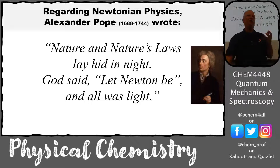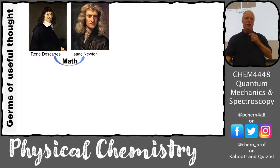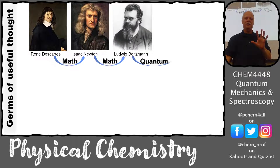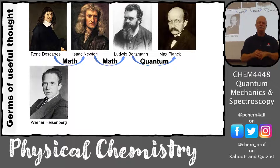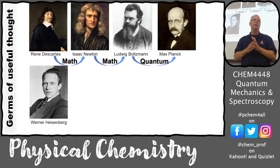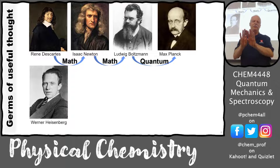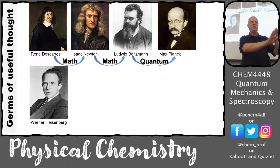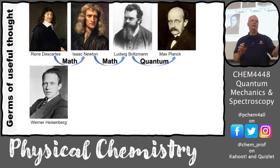Descartes passed that germ of math to Newton, who passed it to Boltzmann, Planck, and Heisenberg. Heisenberg shook the world with his mathematics in quantum mechanics, where he said you can't know the position and momentum of a particle perfectly. You may have heard of the Heisenberg uncertainty principle. It has to do with the position and momentum operators — matrices of wave functions. If you multiply position times momentum and subtract momentum times position, it should equal zero if they could both be known perfectly. But they're not commutative — there's an uncertainty piece.